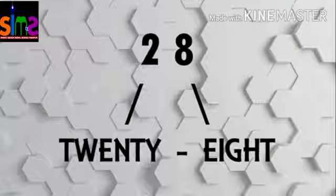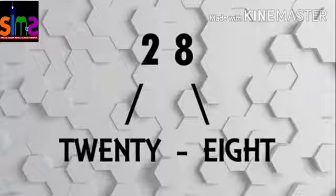Now kids, recall this digit as 28. You can see that when we are pronouncing 28, the sound of two numbers are coming — 20 and 8. When you are saying 28, we are talking about two numbers: 20 and 8. So now kids, we will write the number name of 28.